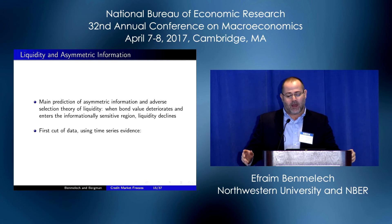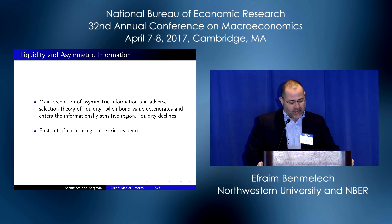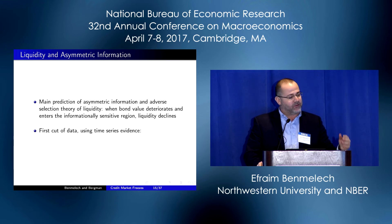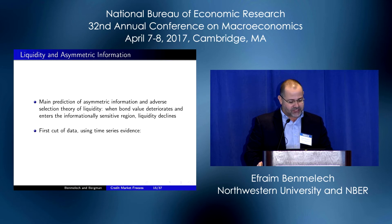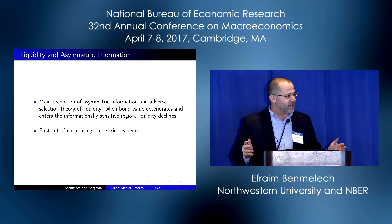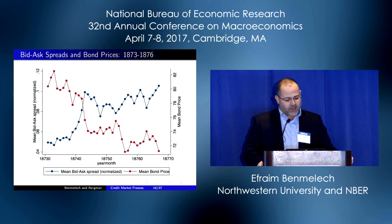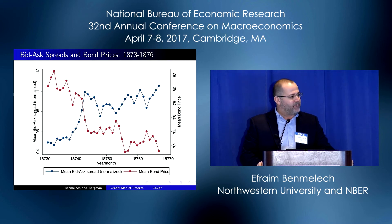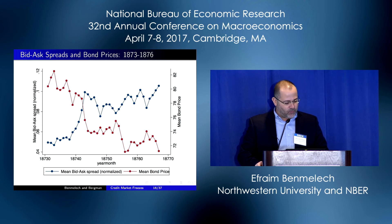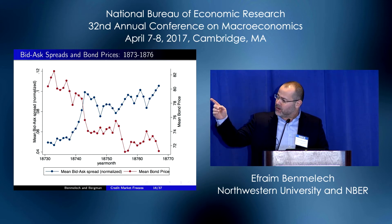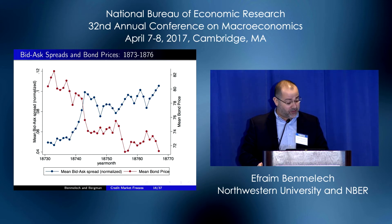Let's start with the model of liquidity and asymmetric information. The main prediction of the asymmetric information and adverse selection theory is that when bond value deteriorates, you enter the information-sensitive region and liquidity declines. As a first cut into the data, we look into some time-series evidence. We start with the financial crisis of 1873, for which we have collected information on all bonds that were trading — weekly observations for every bond with bid and ask spreads.